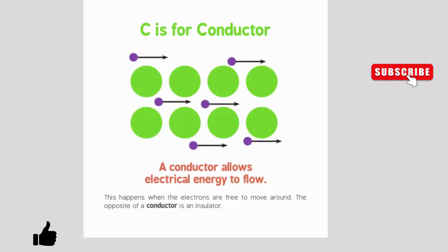C is for conductor. A conductor allows electrical energy to flow. This happens when the electrons are free to move around. The opposite of a conductor is an insulator.